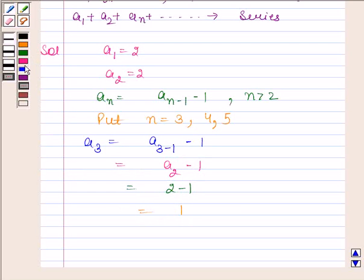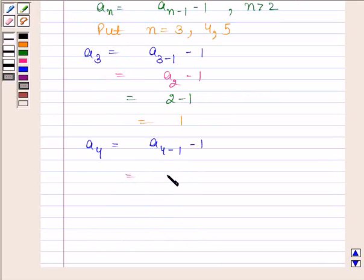By substituting n = 4, we get a₄ = a₄₋₁ - 1 and this is equal to a₃ - 1. a₃ = 1, so we have 1 - 1 = 0.